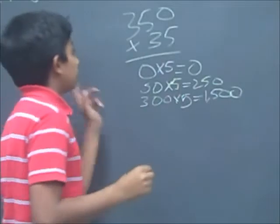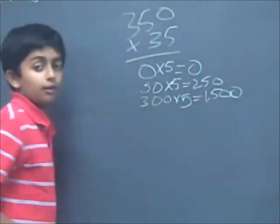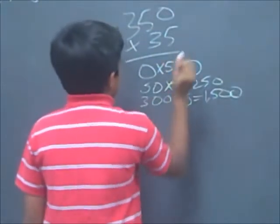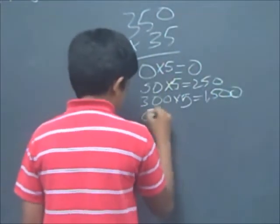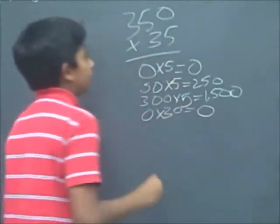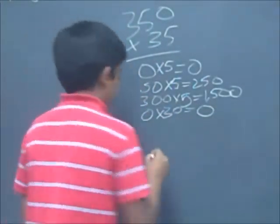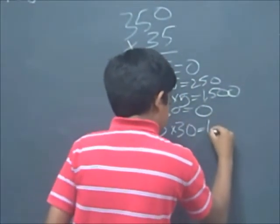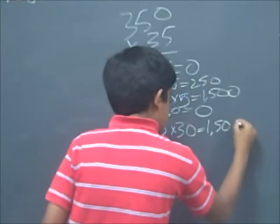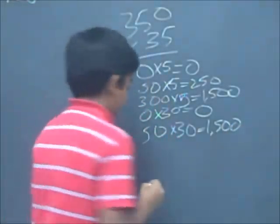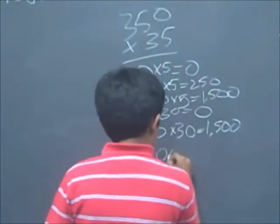Now that you have multiplied all these numbers by 5, now you have to multiply all these numbers by 3. Now you have to do 0 times 30, which equals 0. Then next you have to do 50 times 30, which equals 1,500. Then next you have to do 300 times 30, which equals 9,000.